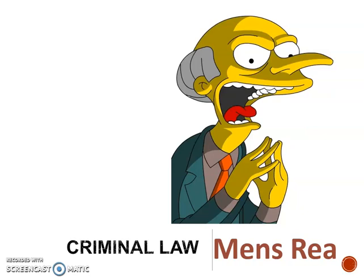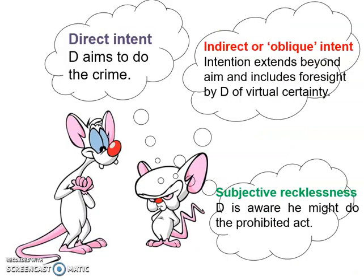There are various ways of categorizing different levels of mens rea, and intention is clearly more culpable than mere recklessness. We're going to look at the different types of mens rea in this tutorial. Using the image of Pinky and the Brain, I want to show you the three types of mens rea you need to know about: direct intent, indirect or oblique intent, and subjective recklessness.